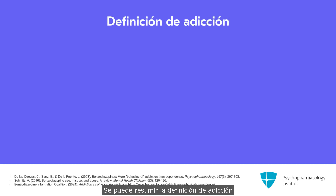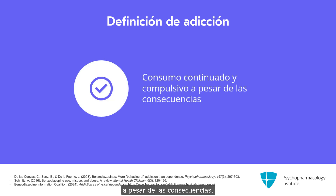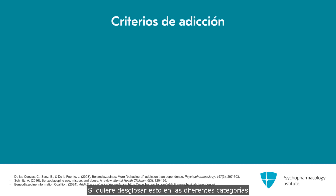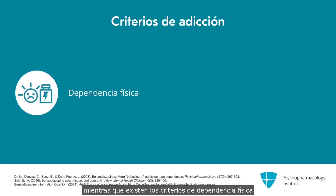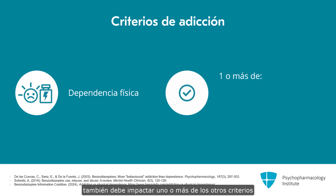You can summarize the definition of addiction, or a use disorder, as continued compulsive use despite consequences. If you want to break this down into the different categories of the criteria for a use disorder, while there are the physical dependence criteria of tolerance and withdrawal, it must also impact one or more of the other criteria, which can be categorized as the three C's.